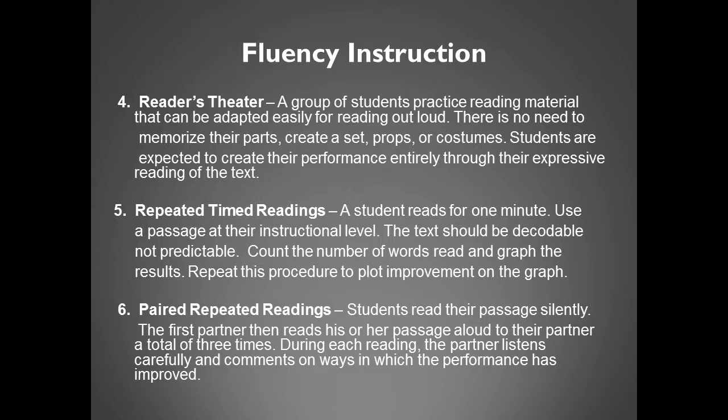Repeated Timed Readings: a student reads for one minute. Use a passage at their instructional level — the text should be decodable, not predictable. Count the number of words read and graph the results. Repeat this procedure to plot improvement on the graph. Paired Repeated Readings: students read their passage silently. The first partner then reads his or her passage aloud to their partner a total of three times. During each reading, the partner listens carefully and comments on ways in which the performance has improved.